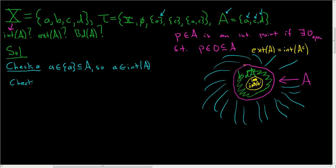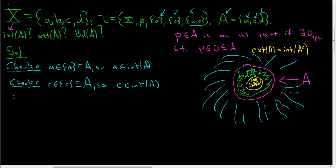Now little c: is there an open set containing little c that's contained in A? Yes, we can use the singleton set containing C, which is contained in A. So little c is in the interior of A. We could have used another set too — little c is in that set, and that set is certainly contained in A. As long as you find one open set, you're good. The last one to check is little d: the only open set containing little d is capital X, but capital X is not contained in A. So there is no open set for which this definition holds, and little d is not an interior point of A.